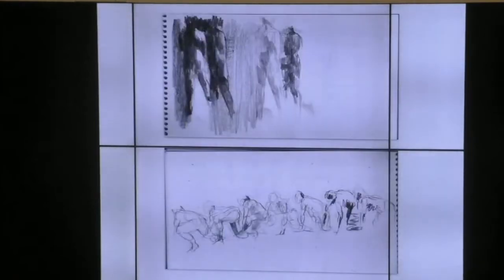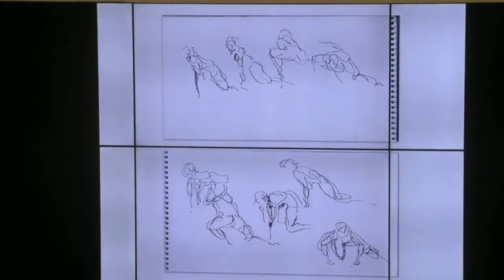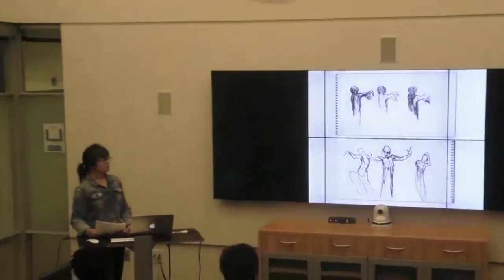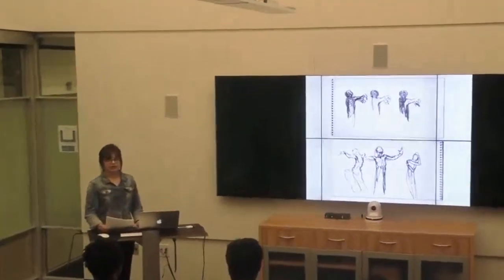One challenge I did face when I was working on these is that I didn't actually have a dancer to draw. So I looked at photographs and videos of dancers trying to get a sense of how bodies move in space. I also drew from Eadweard Muybridge's 19th century photographs, which are part of his work about human and animal locomotion.